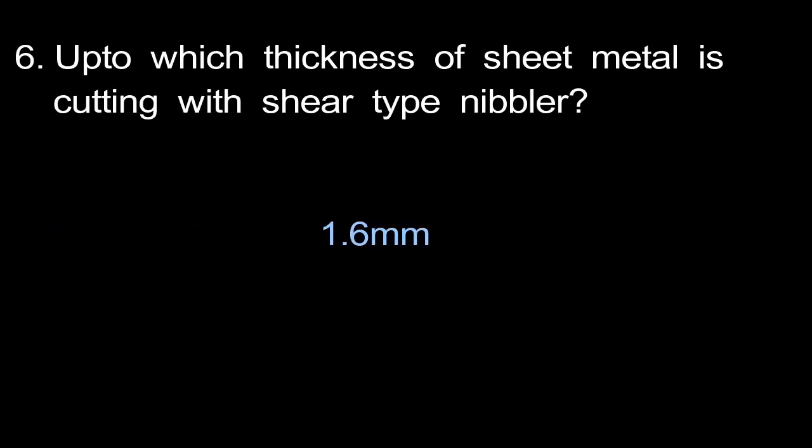Up to which thickness of sheet metal can be cut with the shear type nibbler? The shear type nibbler cuts sheet metal up to 1.6 mm thickness.